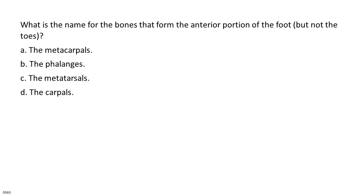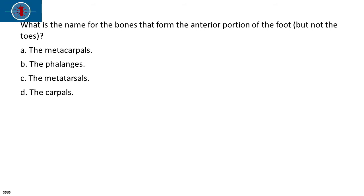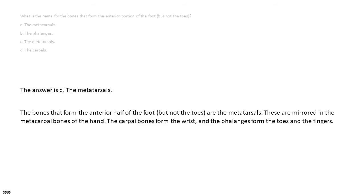What is the name for the bones that form the anterior portion of the foot, but not the toes? A. The metacarpals. B. The phalanges. C. The metatarsals. D. The tarsals. The answer is C, the metatarsals. The bones that form the anterior half of the foot, but not the toes, are the metatarsals. These are mirrored in the metacarpal bones of the hand. The carpal bones form the wrist, and the phalanges form the toes and the fingers.